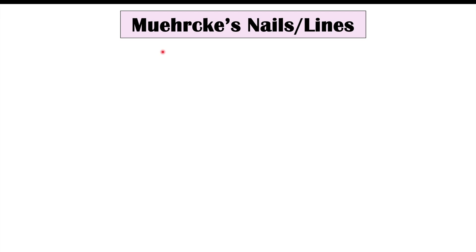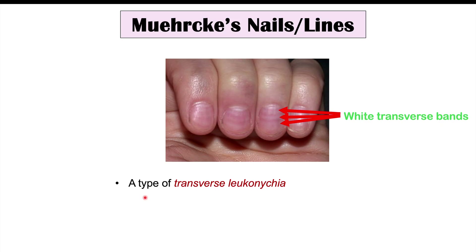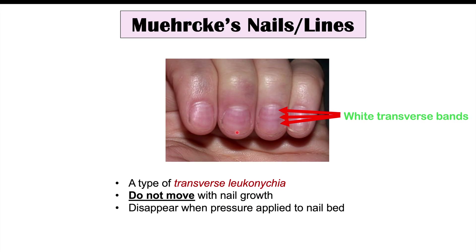We can also see Muehrcke's lines or nails, which look like white transverse bands on the nail. This is a type of transverse leukonychia — not just little white spots, but bands of white running across the nail. Importantly, when the nails grow out, these lines do not move — they stay in the same place because they are caused by something underneath the nail, the nail bed. If you apply pressure to the nail, those white transverse bands will disappear.